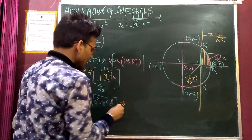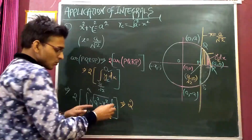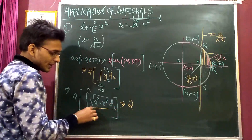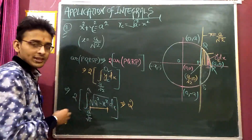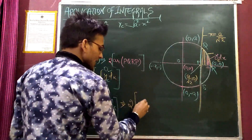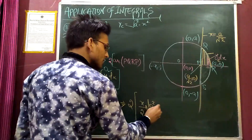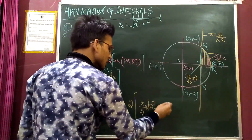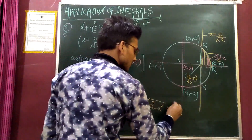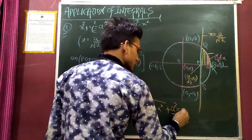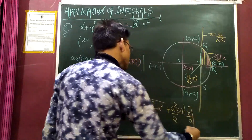Students, applying the standard integration formula: the integral of √(a² - x²) dx equals x/2 · √(a² - x²) plus a²/2 · sin⁻¹(x/a). This is the most frequently used formula in this exercise, so students should remember it well.